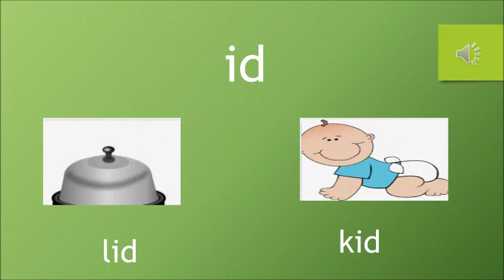Next I word. The sound of I is E and the sound of D is D. So the words are LID and KID. LID is a cover and KID is a small baby.